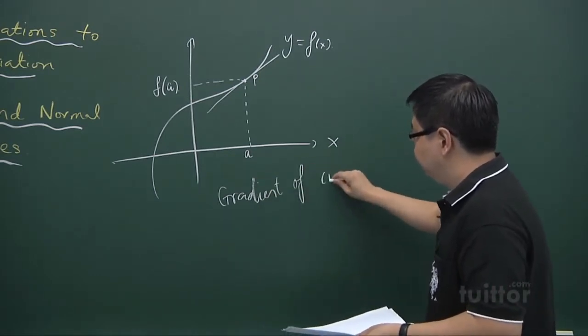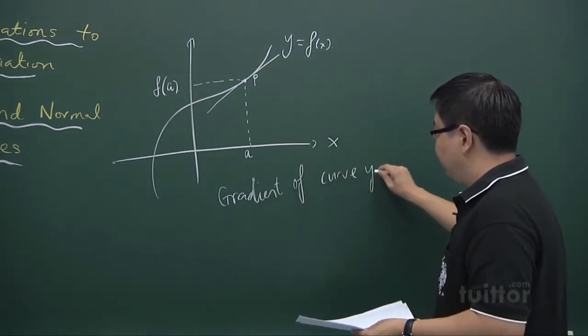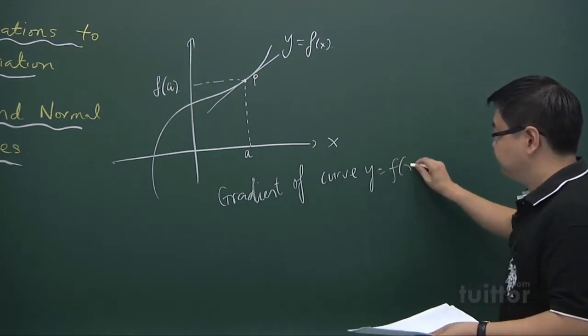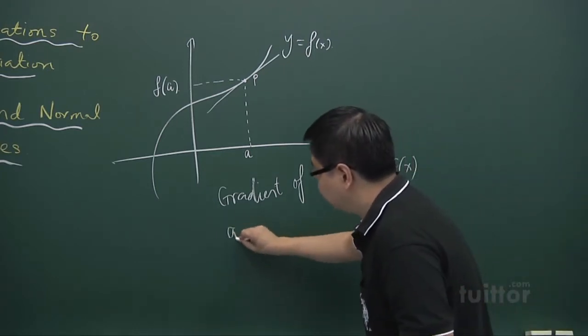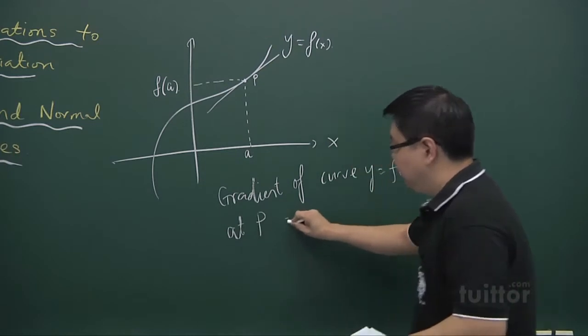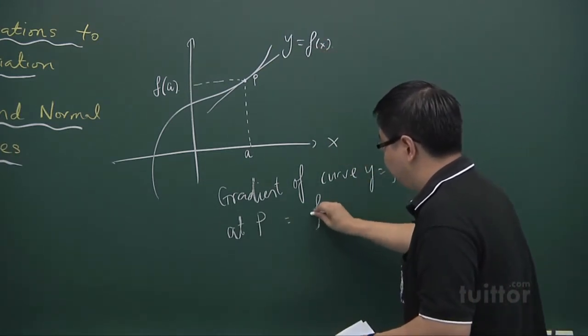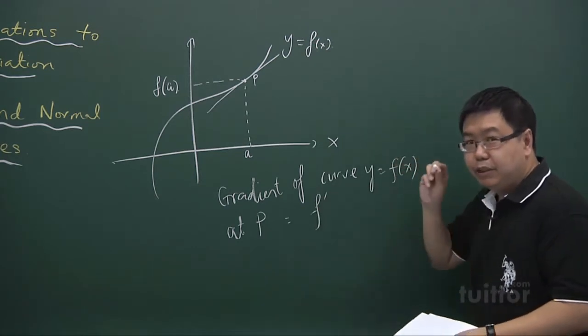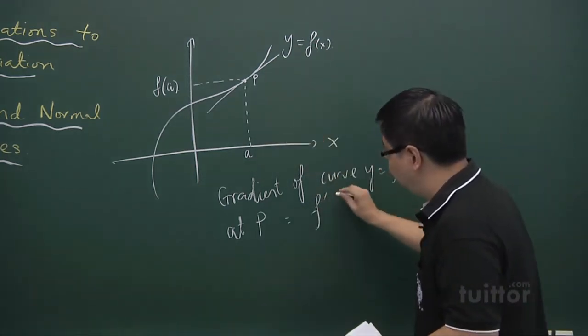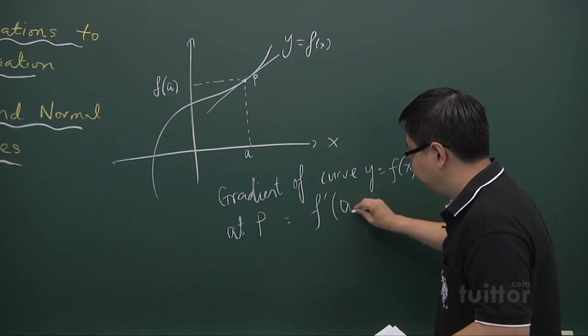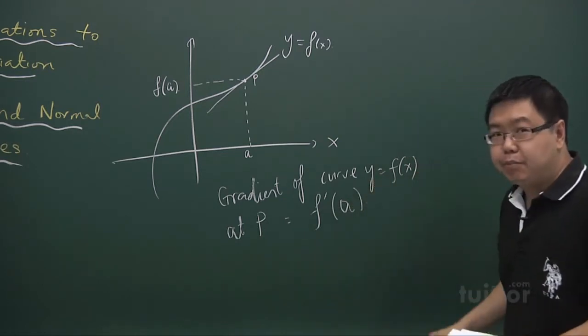The gradient of the curve y equals f(x) at the point P is given by first differentiating this function, which gives f prime of x. Then you substitute x equal to a into the gradient function, so there is f prime of a.